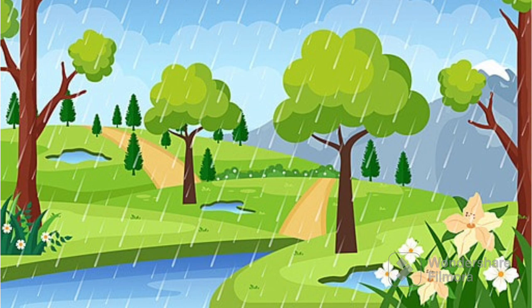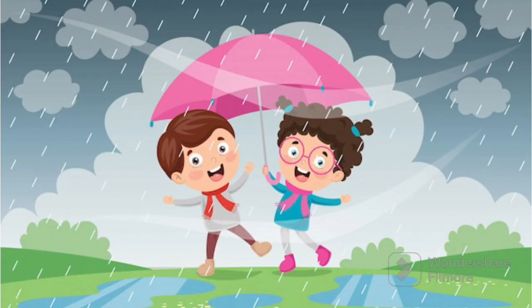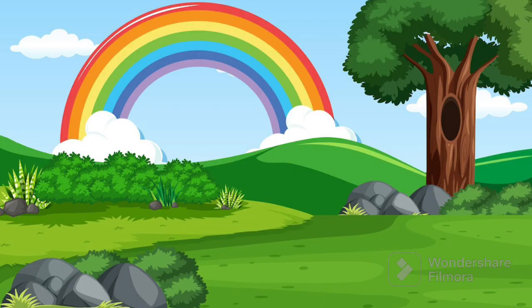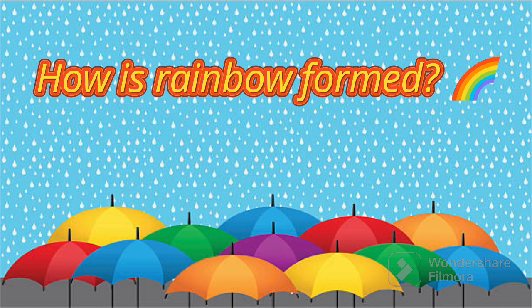Flowers and animals. Kids, you might notice that the air feels cooler and fresher after it rains. People often wear colorful raincoats and carry umbrellas to stay dry when they go outside. Sometimes you can even spot beautiful rainbows after the rain stops. Now let's see how is rainbow formed.